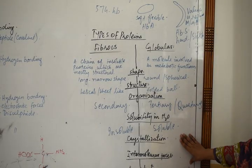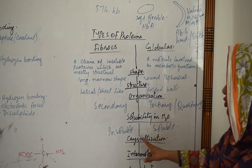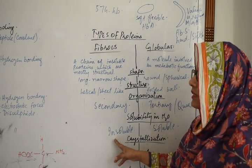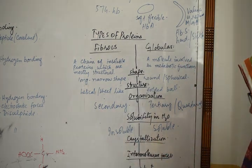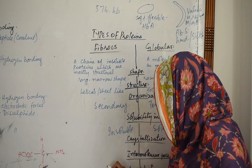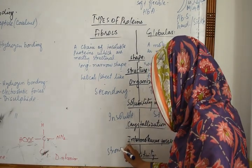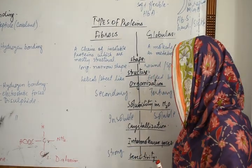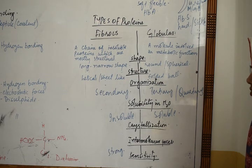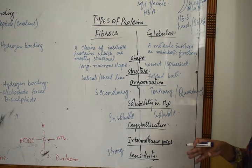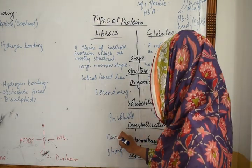We have discussed that the fibrous proteins are insoluble in water. Why are they insoluble in water? The reason is that they have strong intermolecular forces. The stronger the intermolecular forces, the more insoluble the protein is, and it cannot be crystalline as well.